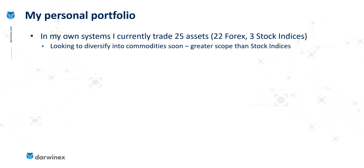With commodities, this actually gives you much more scope for diversification than you get in stock indices. As I said in the last episode, all stock indices tend to follow each other — they tend to be very correlated. When one goes up, they all go up; when one goes down, they all go down. Whereas with commodities, that's not the case. We have different sectors — for example, precious metals, energy, food — and these all tend to be relatively uncorrelated.